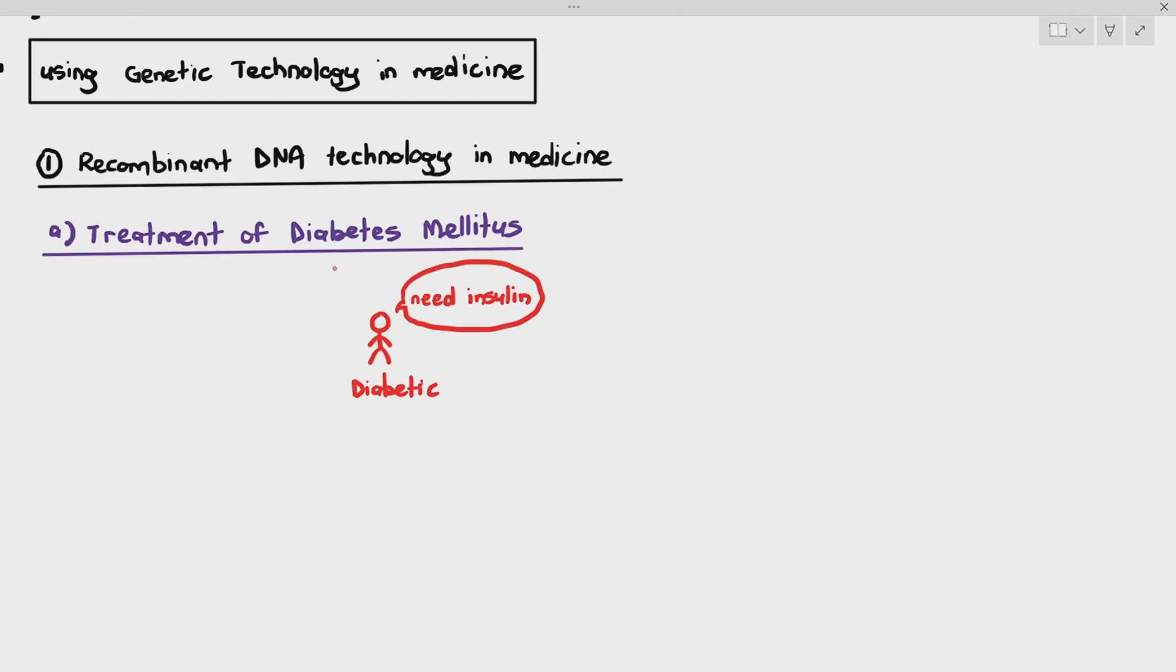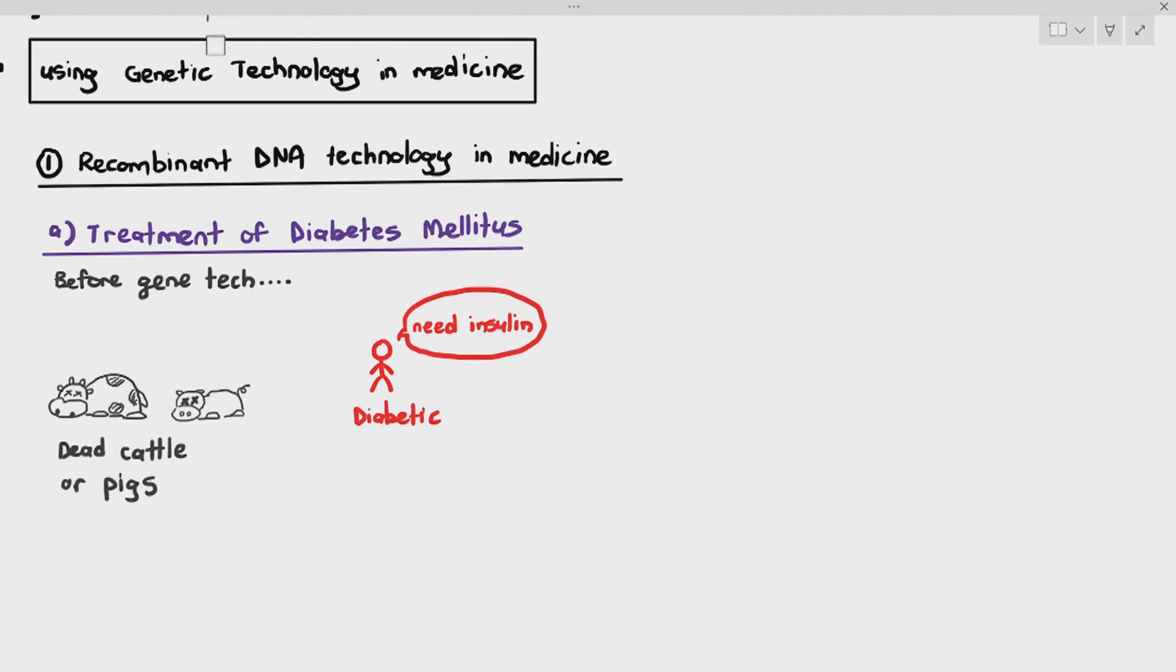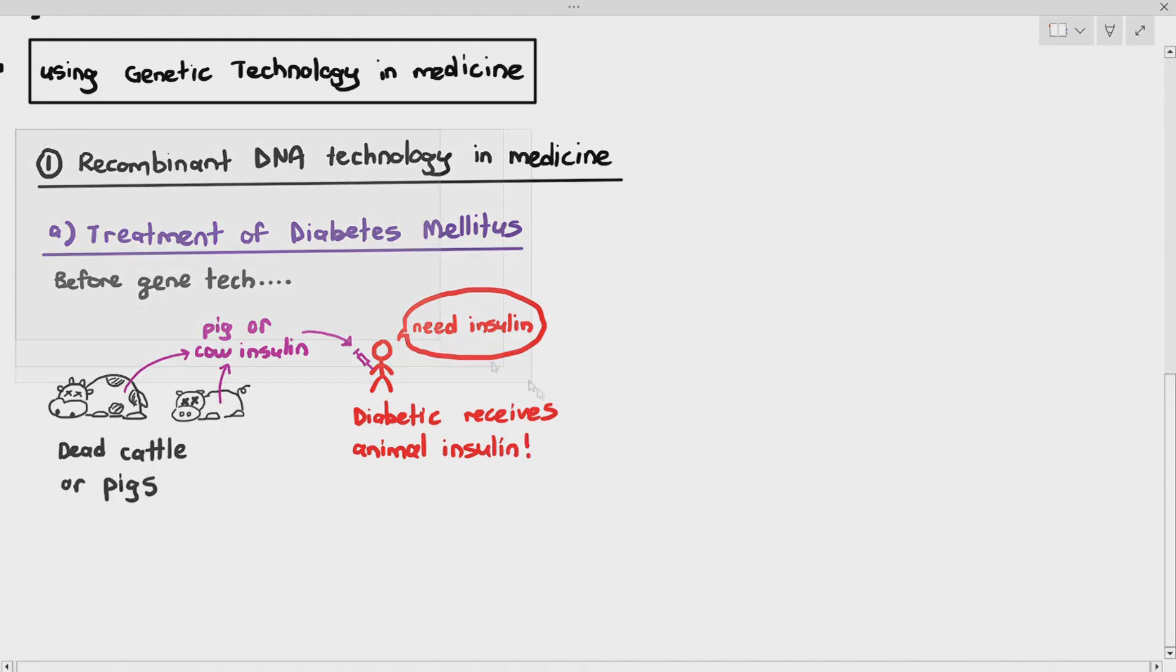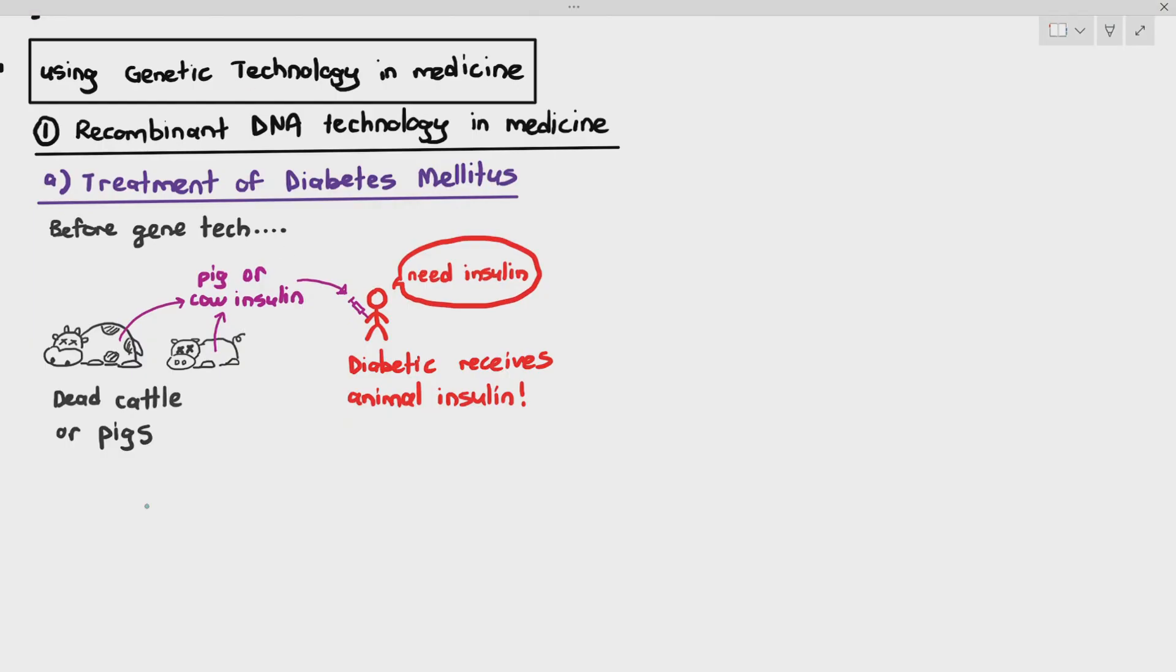Now before gene tech, it's a very important question to ask. If these people needed insulin, where did they get the insulin from? Before gene tech was a thing, we would normally get insulin, animal insulin by the way, from dead cattle or pigs. Now immediately you might see some problems if you get insulin from animals. So what they will do is when the cattle or pigs die, they will remove the pancreas of these animals and extract as much insulin as possible out of these animals. And they will inject those animal insulin into the diabetic person. So in this case, the diabetic patient receives animal insulin, whether it's pig or cow insulin.